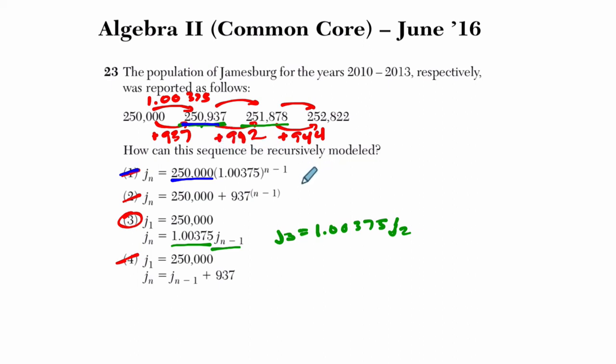And also, if you think about, it wouldn't really model this sequence if you let n go below 1. If n is 0, you get 0 minus 1, which is negative 1, and then this would essentially take 250,000 and divide it by 1.00375, which does follow the sequence here. It just goes abstractly speaking.